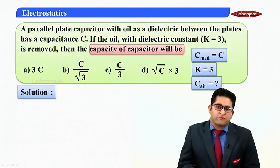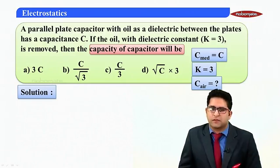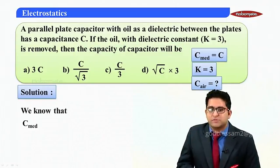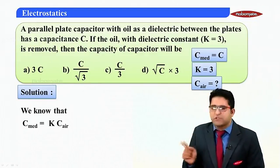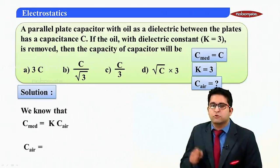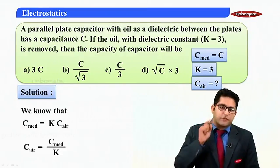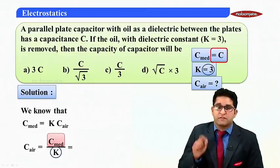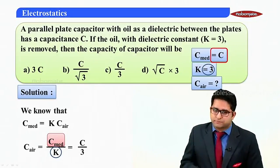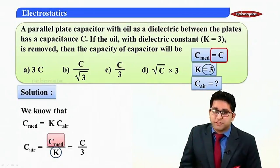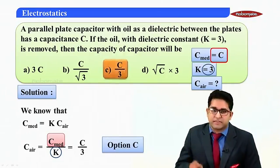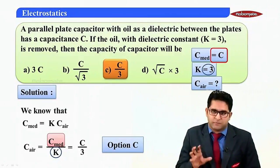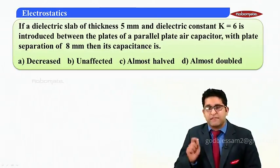We are provided with C_medium, K, and we need to find C_air. The relation is: C_medium equals K times C_air. Rearranging: C_air equals C_medium divided by K. Substituting — C_medium equals C and K equals 3 — we get C_air equals C upon 3. Checking the options, option C is the correct answer.